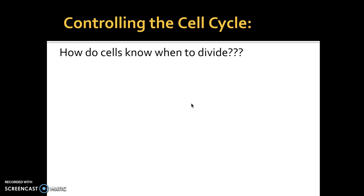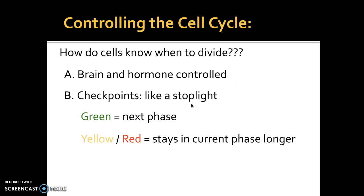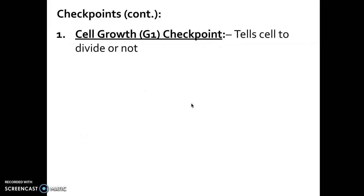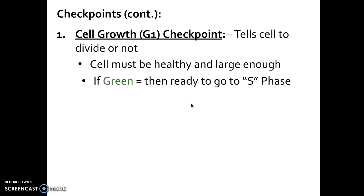So how do cells know when to divide? Your brain and hormones control this process, acting like checkpoints to make sure everything is happening as it should. These proteins give your body a green light so the cell can move to the next stage; if things didn't happen correctly, they give it a red light. Like a stoplight — green means go, yellow or red means it has to stay in the current phase longer, or apoptosis happens if it can't be fixed. The first checkpoint is at G1, where it tells the cell if it's ready to divide — the cell must be healthy and large enough with sufficient copies of internal organelles.